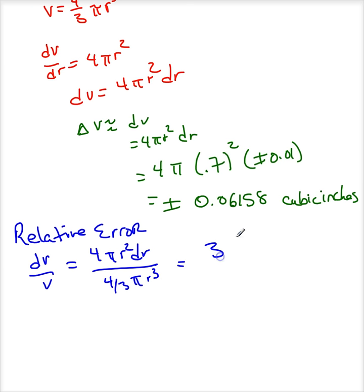So this is 3 dr over r. So this is approximately equal to 3 dr is plus or minus 0.01. And r in this case is 0.7. So this is about equal to plus or minus 0.0429.